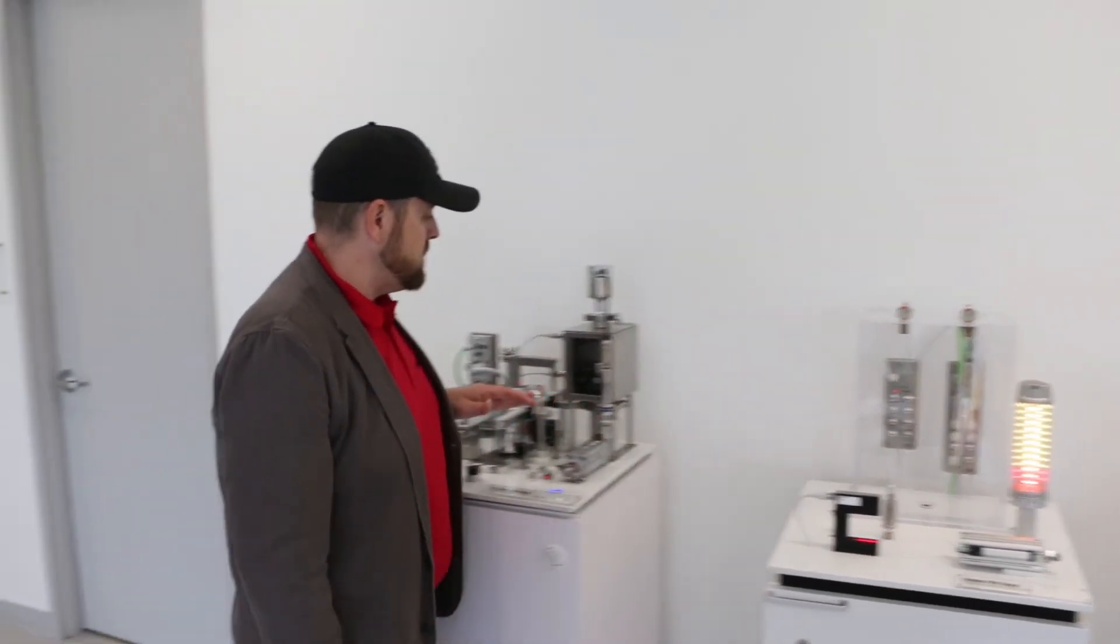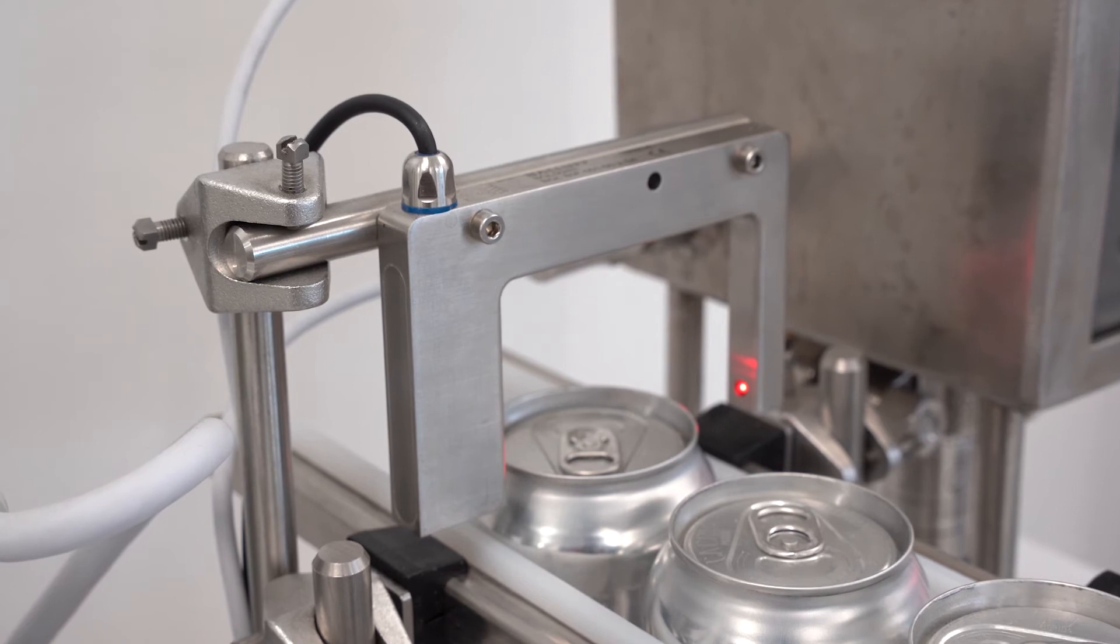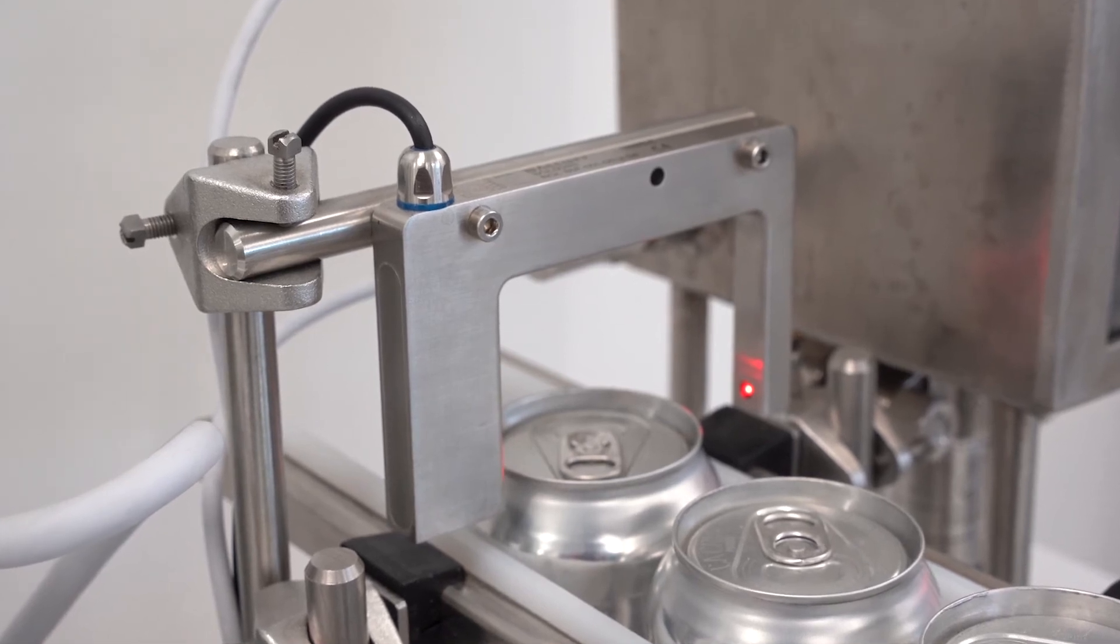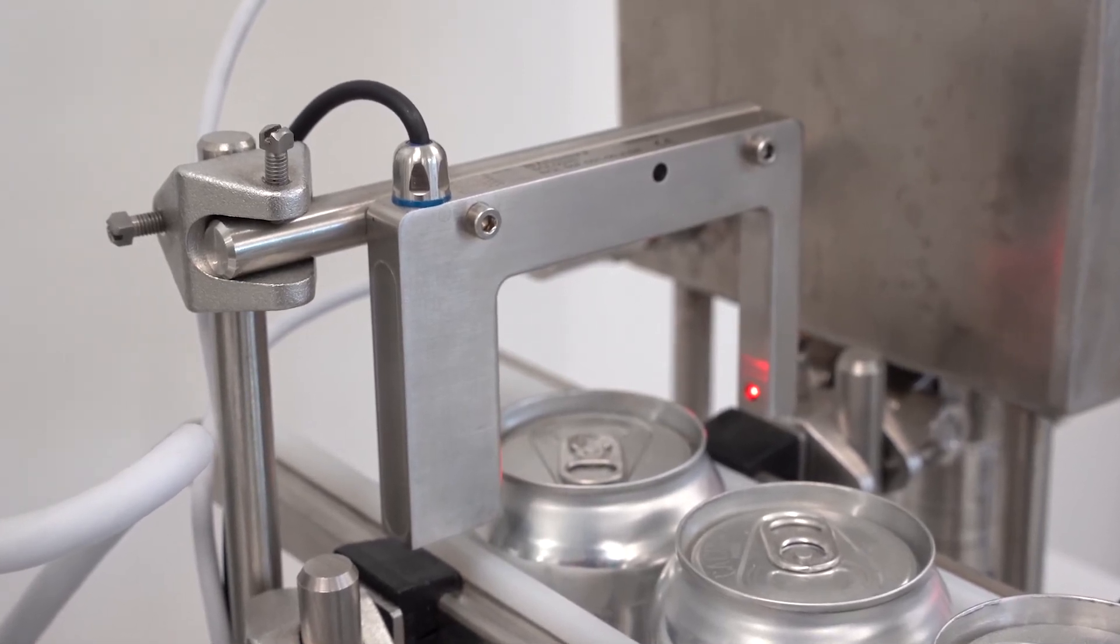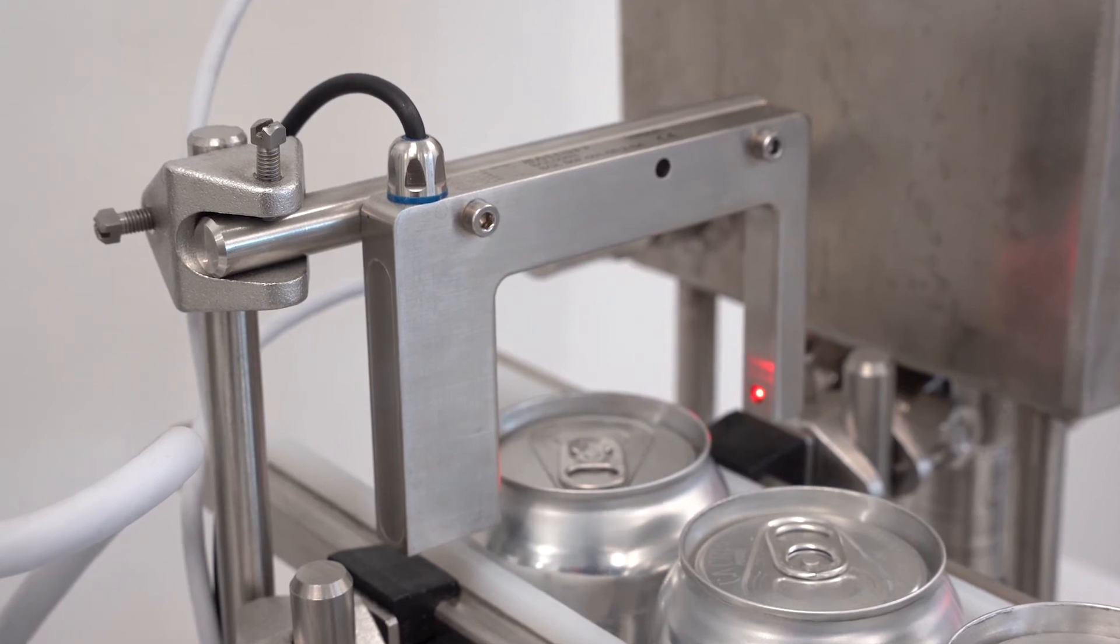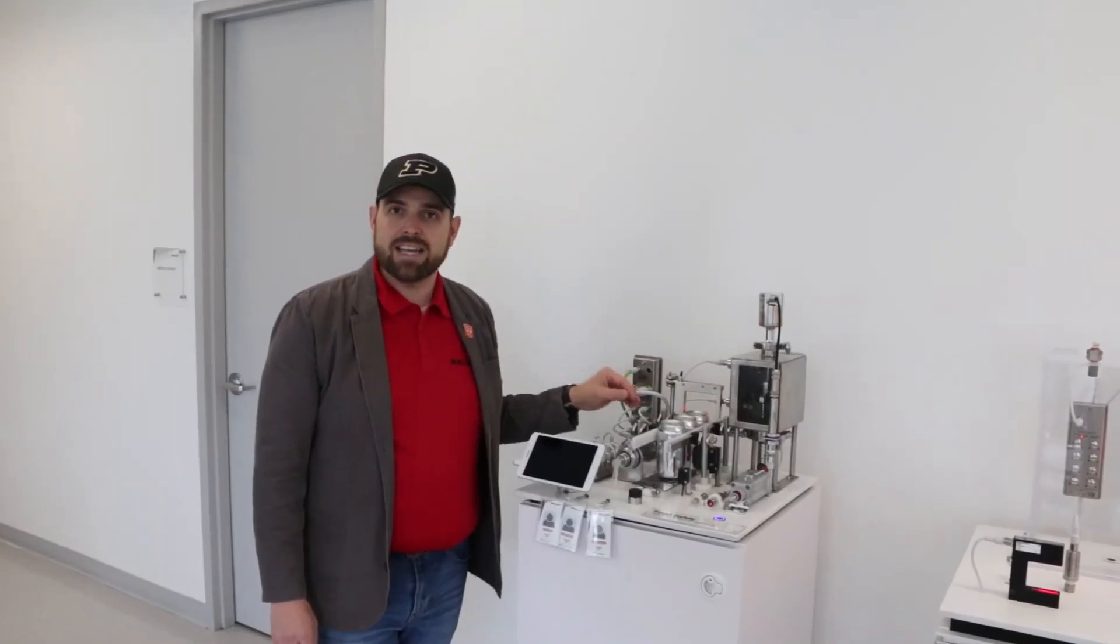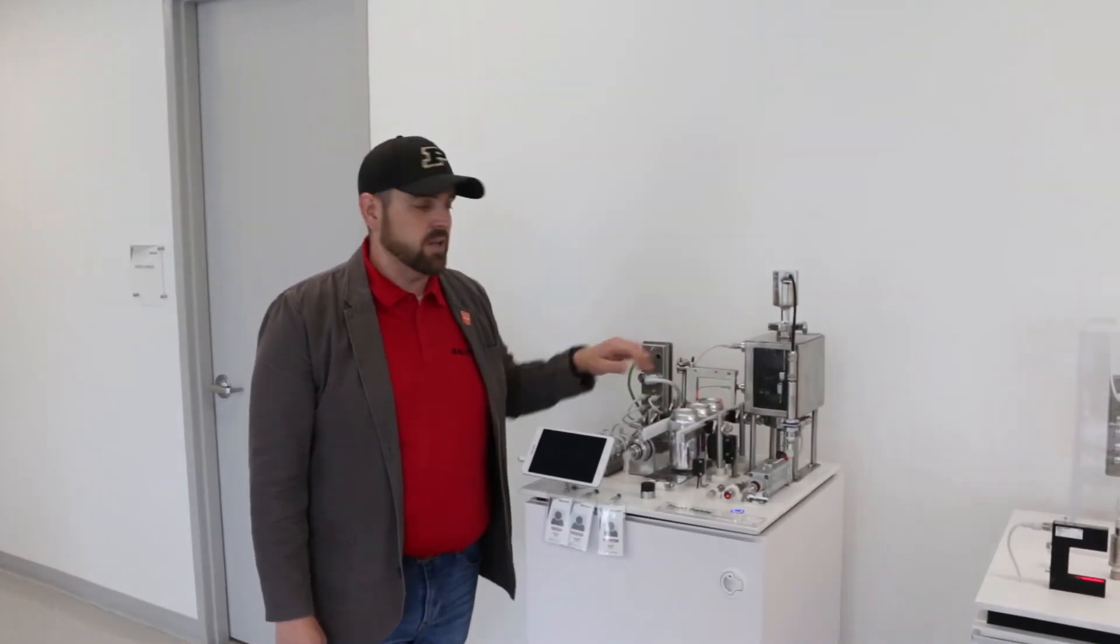The last application I want to show you is a through-beam fork sensor here. It's just a straight on-off, but it's being used on this production line to detect the presence of the caps on the cans and to make sure that they're seated properly.